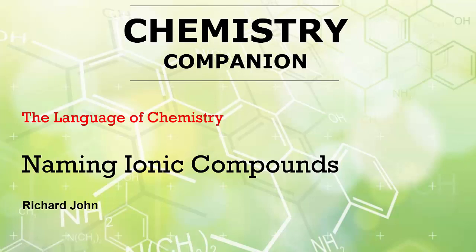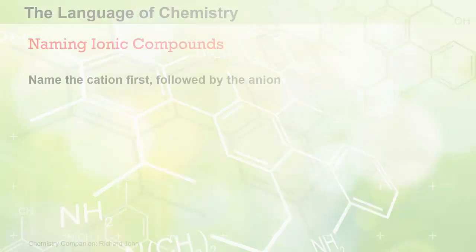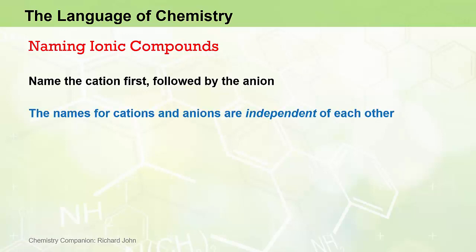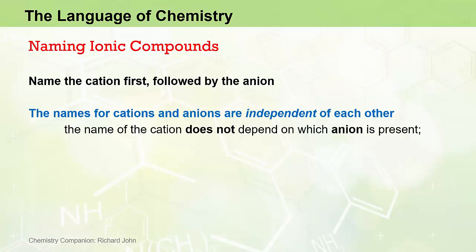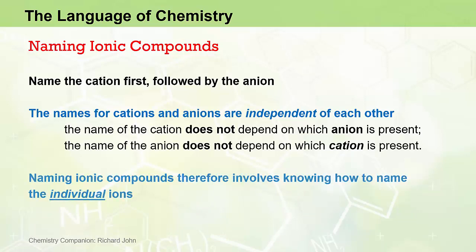In this video, we're going to look at some of the naming rules that allow us to identify and name ionic compounds. The good news is that the naming of ionic compounds is reasonably straightforward. We simply write the name of the cation first, followed by the name of the anion. The names for the cations and anions are independent of each other, which means the name of the cation does not depend on which anion is present, and conversely the name of the anion does not depend on which cation is present. So the naming of ionic compounds simply involves knowing how to name the individual ions.